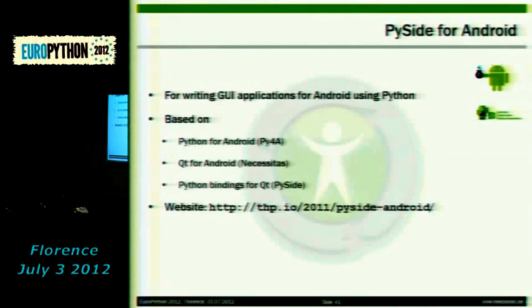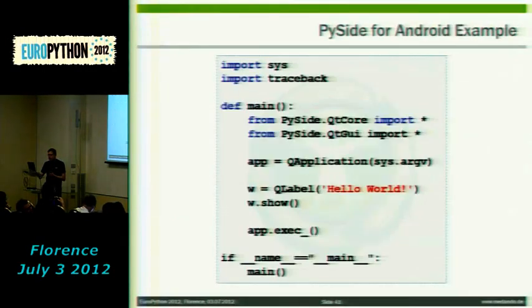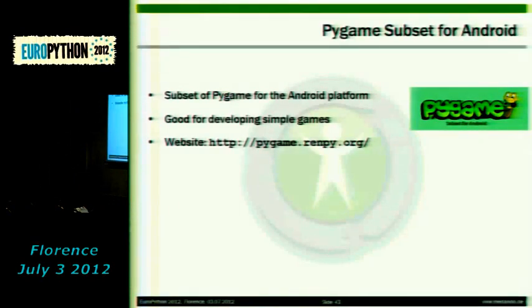The next thing is PySide for Android. If you want more sophisticated user interfaces beyond simple elements or web-based solutions, you can use a Qt implementation for Android with Python bindings — this is called PySide. It's based on Python for Android with a special Qt implementation for Android. All the information is on Thomas Perl's website. There's also Pygame available on Android — actually a subset — which I think is very good for developing simple games.